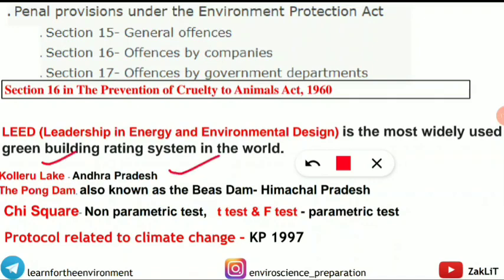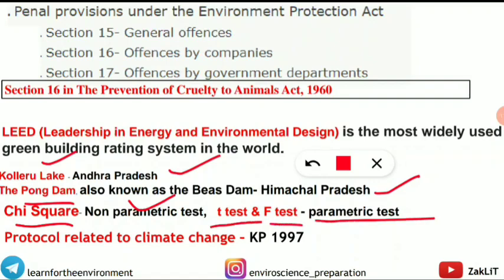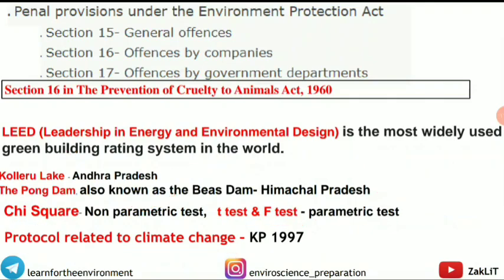A matching question included: Kolleru Lake — Andhra Pradesh; Pong Dam (also called the Beas Dam) — Himachal Pradesh. Non-parametric vs. parametric tests: Chi-square test is non-parametric; t-test and F-test are parametric. A simple question asked: the protocol related to climate change is the Kyoto Protocol (KP), 1997.